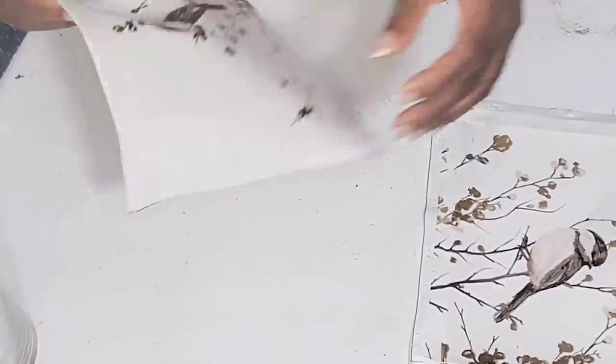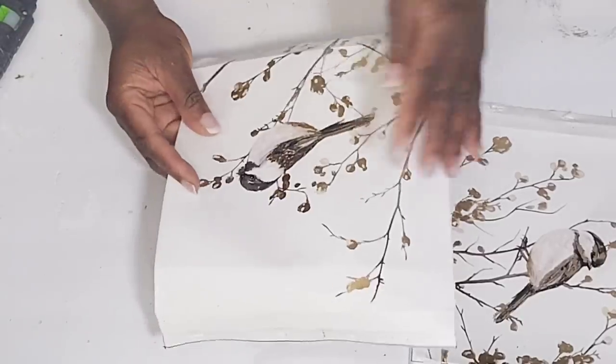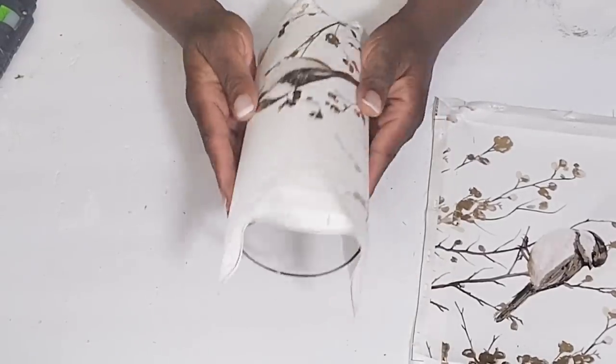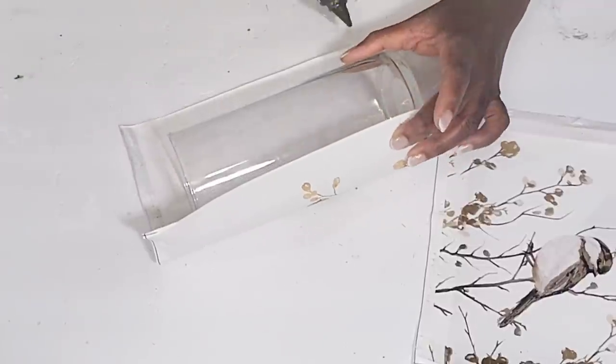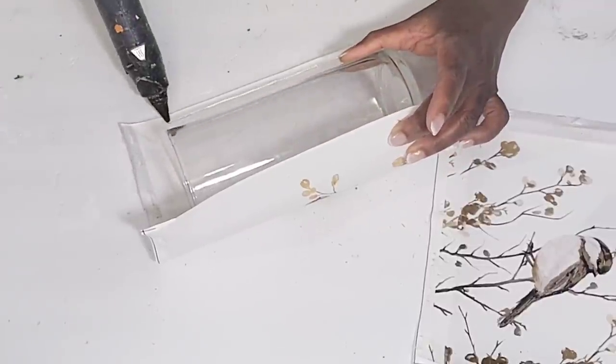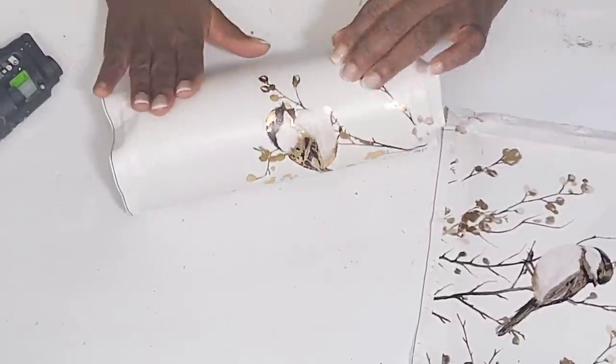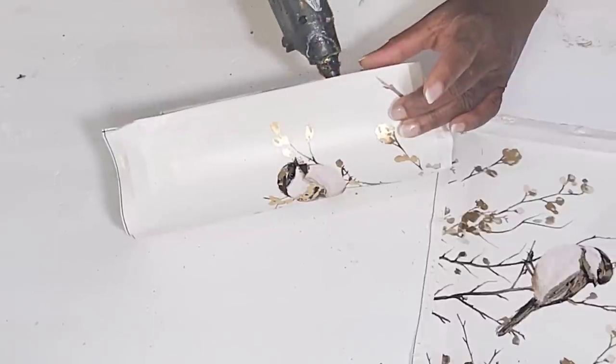And then I'm going to be using some hot glue to attach it. You don't have to use a lot of hot glue around this vase for this DIY. So what I'm going to do is just take a line to connect that side, and then I'm going to connect the other side.